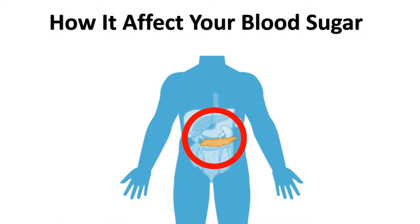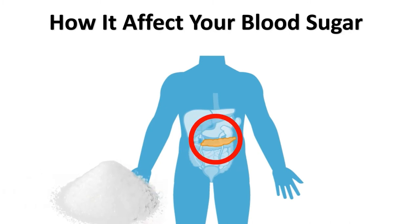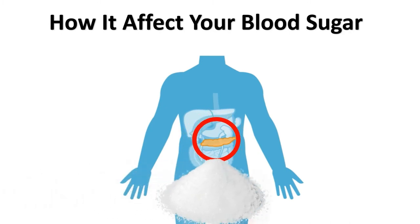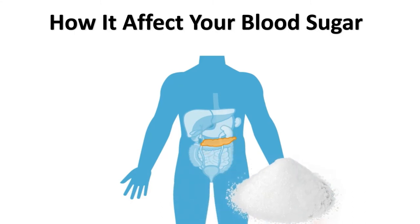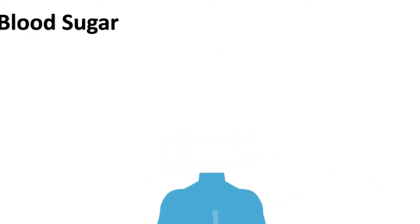This causes sugar to build up in the blood. But your body's cells need sugar, and without it they don't have enough fuel to work as they should. The three main types of diabetes all lead to a buildup of blood sugar. This happens because of problems with insulin, but each type has a different cause and treatment.